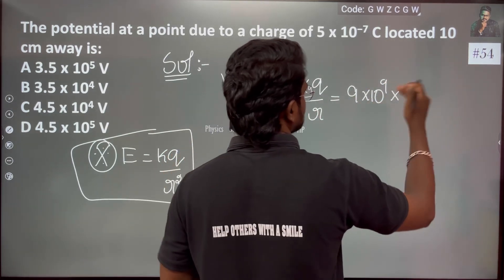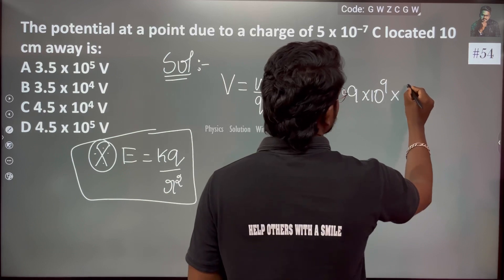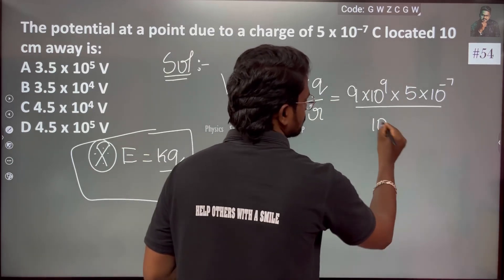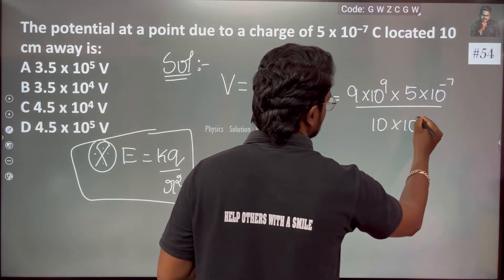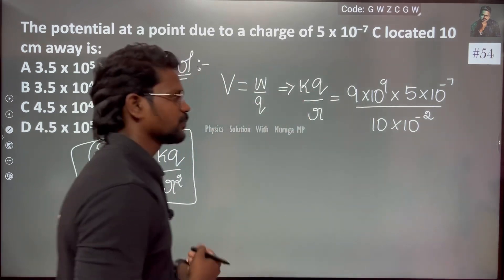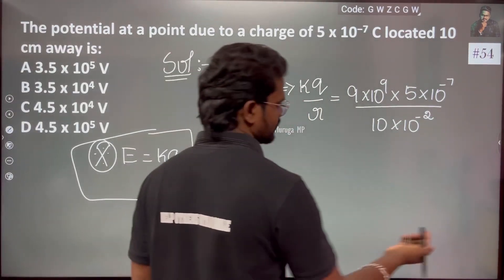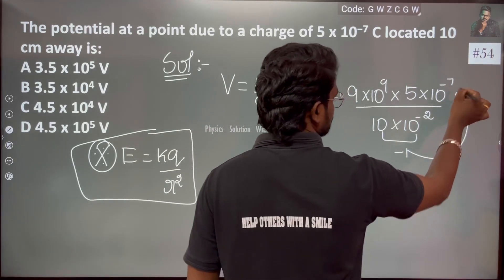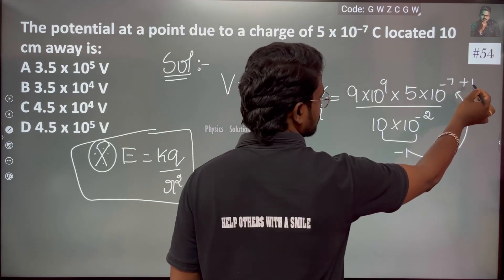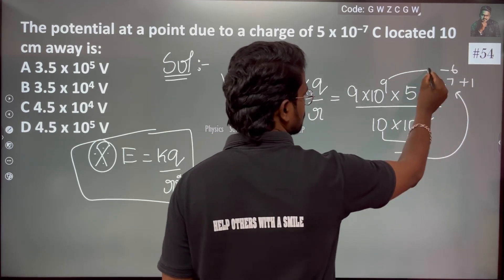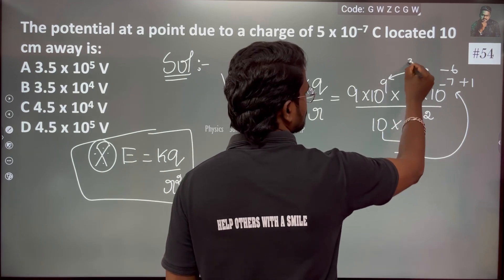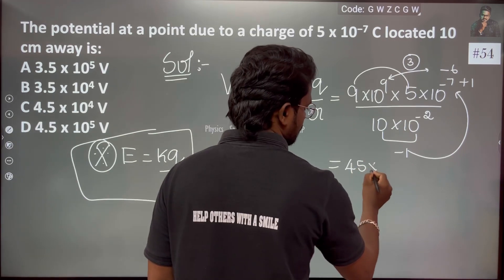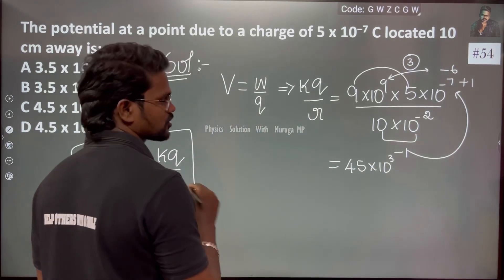Substituting the values: charge is given, and 10 cm equals 10 × 10 to the power minus 2. Working through the powers: minus 1 plus 1 is 0, minus 6 plus 3 gives us 3. The result is 45 multiplied by 10 to the power 3 volts.